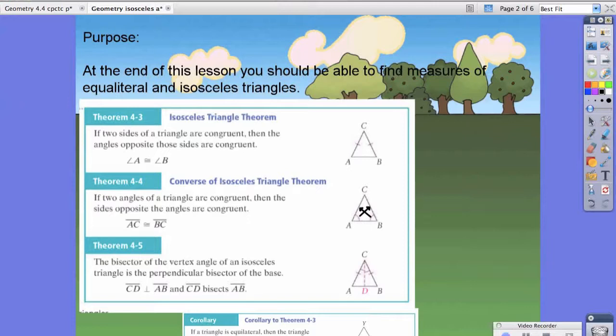Therefore, it says if line segment CD is perpendicular to line segment AB, then CD bisects line segment AB.